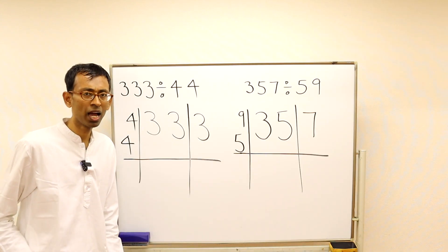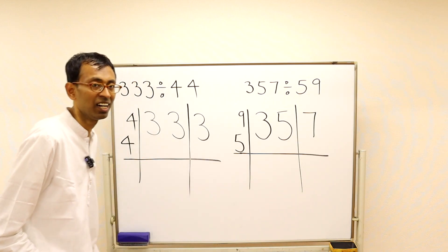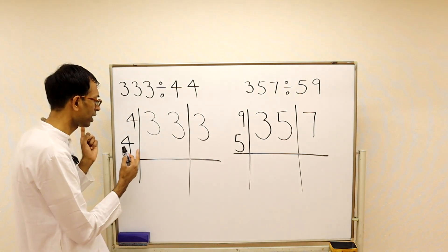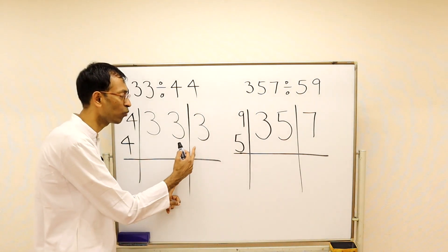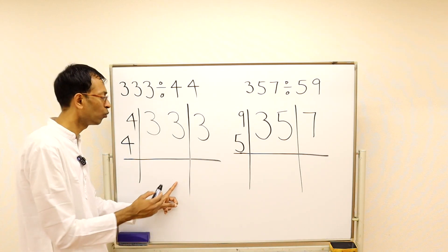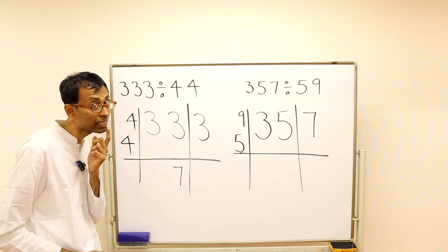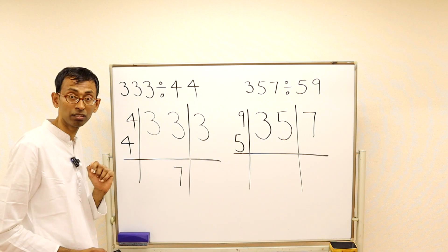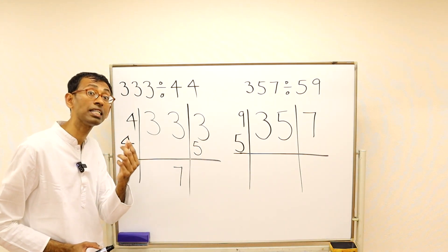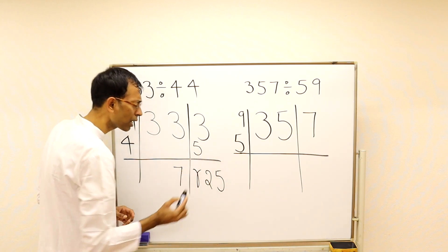Now do these two problems by yourself. First: 333 divided by 44. Divide 33 by 4 — normally 8 remainder 1, but that gives a bar number (since 4×8=32, making 13, and 4×8=32 subtracted from 13 would be negative). So instead use 7: 33 divided by 4 is 7 remainder 5. That makes 53. Multiply: 4 times 7 = 28. Subtract: 53 minus 28 = 25. Answer: 7 remainder 25.